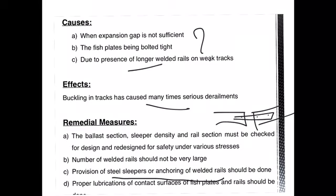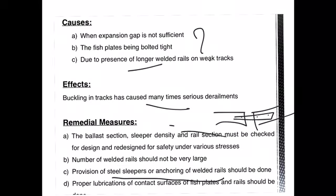These are some of the defects that can occur in the rail section. In the next session, we will be discussing the various failures in the rail section and also the joints provided to connect two different rail sections. Thank you everyone.